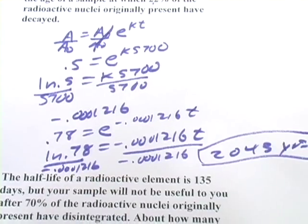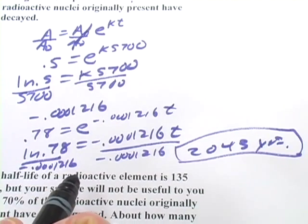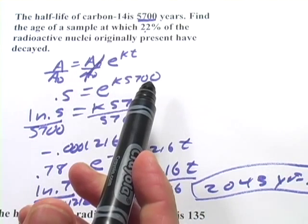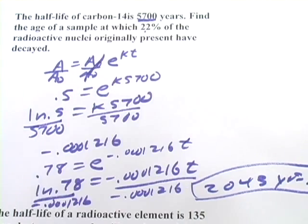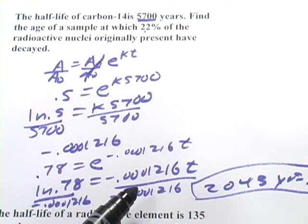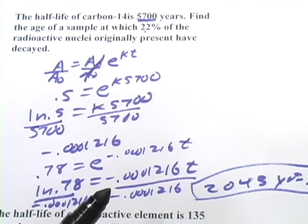And I always like to pause and ask myself, does this make sense with a problem? If it takes 5,700 years for half of it to decay, only 22% decays after 2,043 years. That seems to make sense. It seems to be in the ballpark.